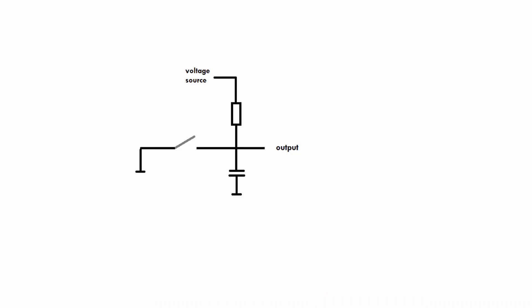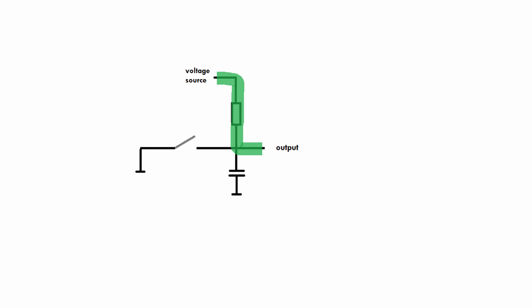This is a very popular debouncing circuit. It consists of a resistor and a capacitor — and a switch, of course. It's a little bit interesting because when the switch is closed, the output is connected to ground through the switch, which means the output is low. When the switch is opened, the output is connected to the voltage source, which means the output is high. So when the switch is off the output is high, and when the switch is on the output is low — which is a bit weird, but it's just a matter of turning things around in the software and you're good to go.